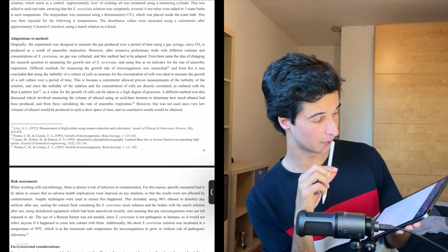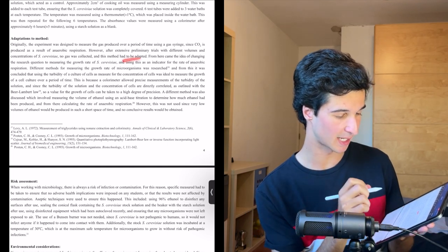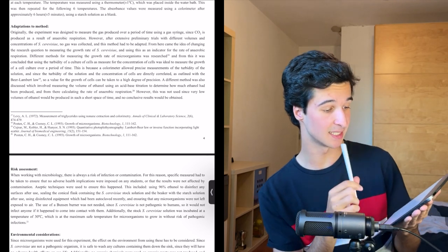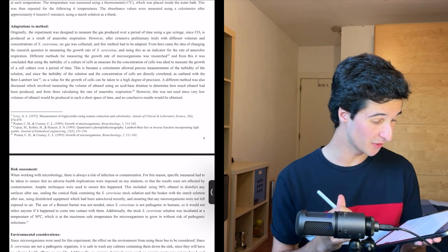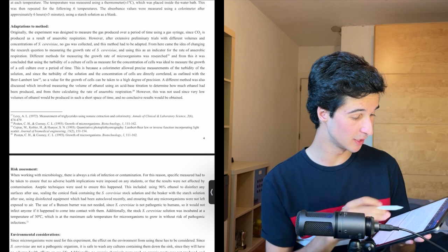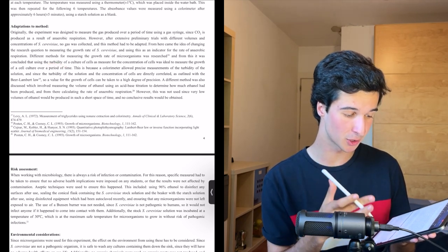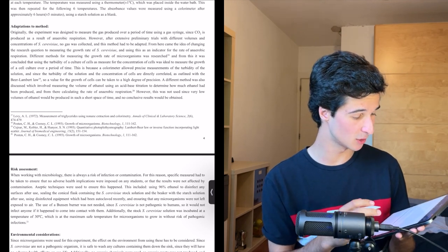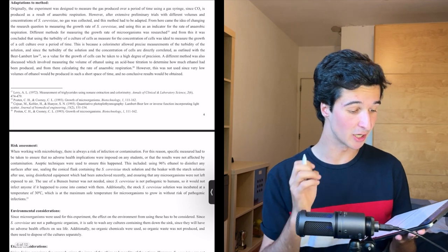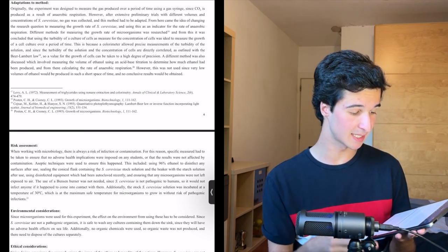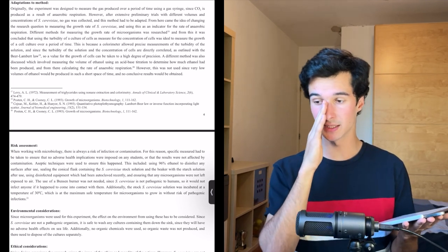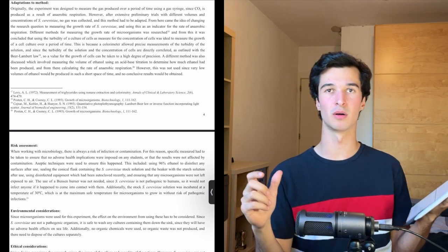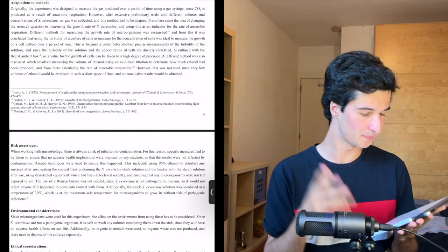So originally the experiment was designed to measure the gas produced over a period of time using a gas syringe. However, after extensive preliminary trials with different volumes and concentrations, no gas was collected and this method had to be adapted. From here came the idea of changing the research question itself to measure the growth rate of yeast and using this as an indication for the rate of anaerobic respiration. It was concluded that using the turbidity of a culture of cells as a measure for the concentration of cells was ideal. That sort of makes sense. Fine.